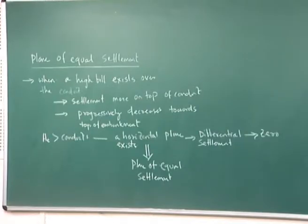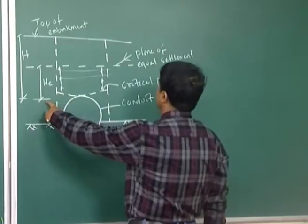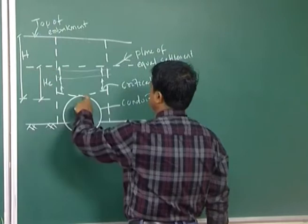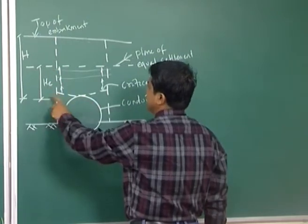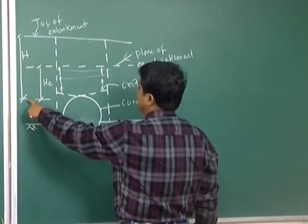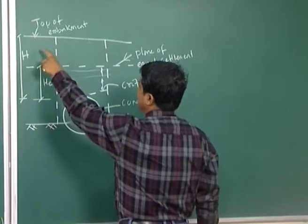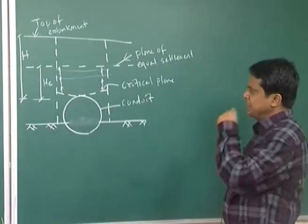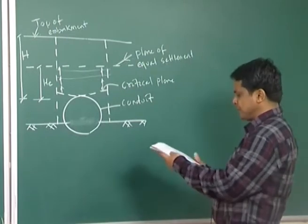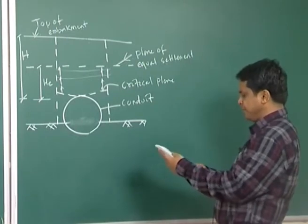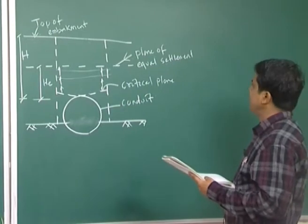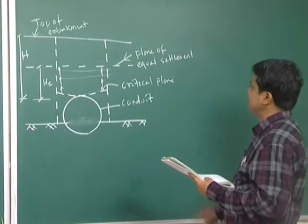He is the height from the plane of equal settlement down to the conduit top surface, and H is the total height from the top of the embankment down to where the conduit is. The plane of equal settlement determines the classification of conduit type.